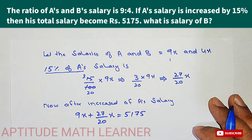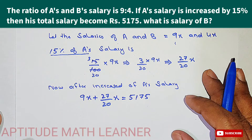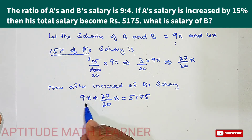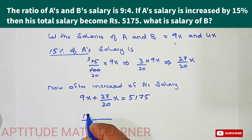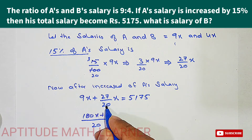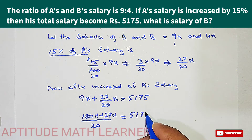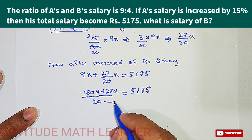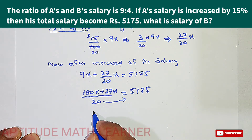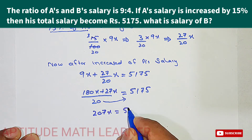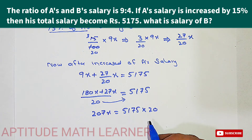After solving we can get the value of x and then find B's salary. Taking the LCM as 20, we get 9 multiplied by 20 that is 180x, plus 27x, divided by 20, is equal to 5175. So 20 cancels out and we get 180 plus 27, that is 207x is equal to 5175.